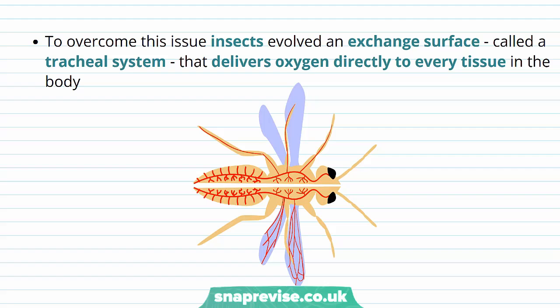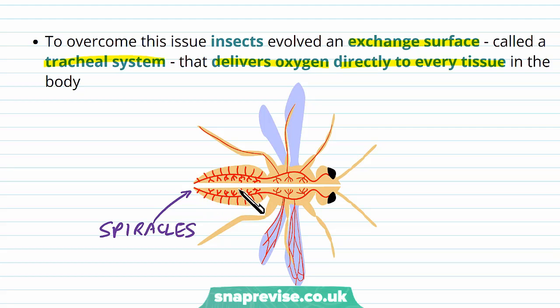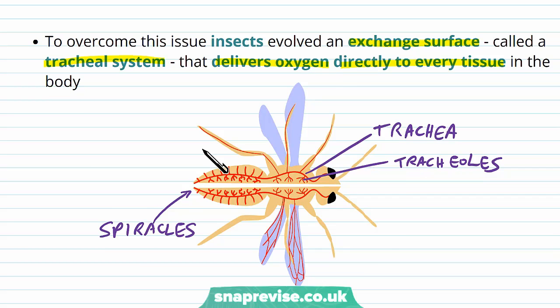Insects have evolved a specific type of exchange surface called a tracheal system, which delivers oxygen directly to every tissue and removes CO2. It has openings to the airways known as spiracles, which lead to larger airways called trachea. The trachea then divide into smaller tubes known as tracheoles. This is analogous to the human lungs, where we have one trachea dividing into several bronchi and bronchioles.